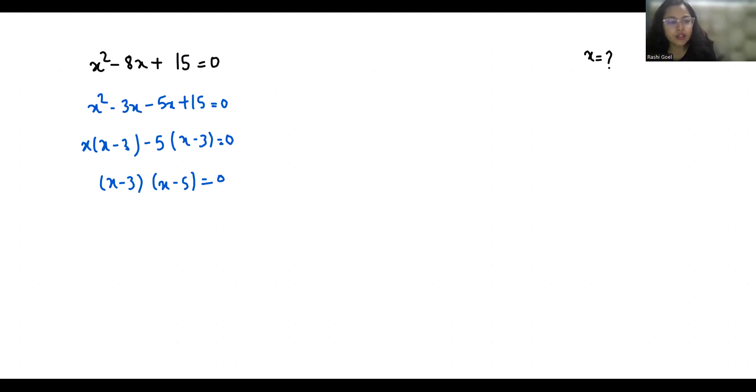So the value of x in first case is 3 and x minus 5 equals 0, the value of x is 5.